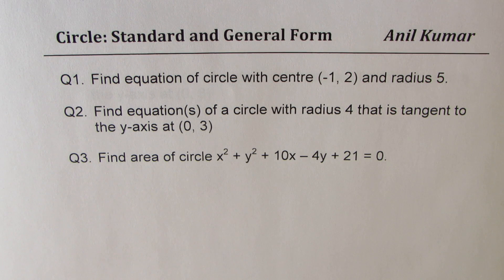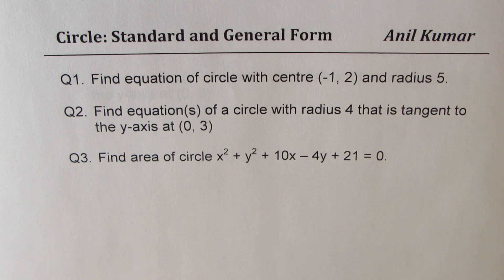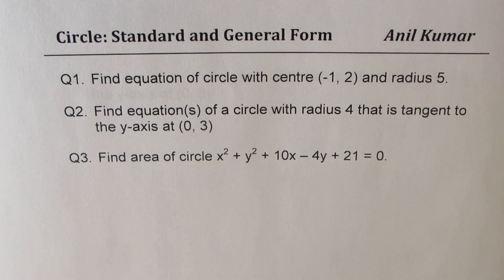Question number one: find the equation of a circle with center (-1, 2) and radius 5. Question 2: find the equation of a circle with radius 4 that is tangent to the y-axis at (0, 3). Question number 3: find the area of the circle x² + y² + 10x - 4y + 21 = 0.